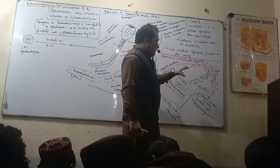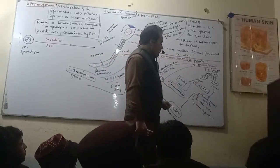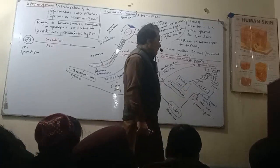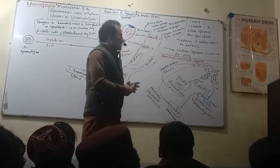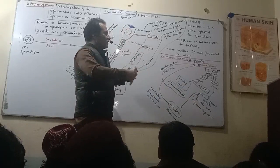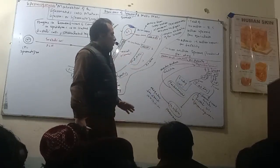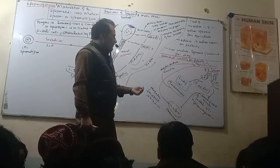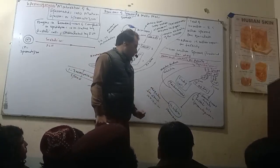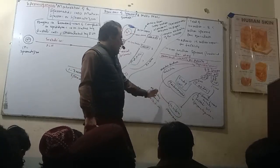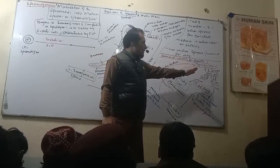FSH levels are regulated by Sertoli cells through inhibin, which signals the high level back to reduce further FSH secretion.